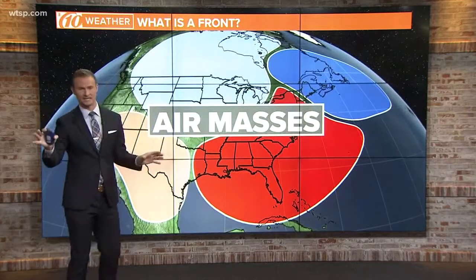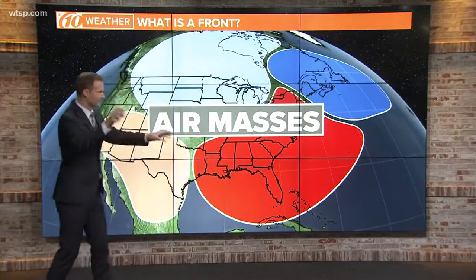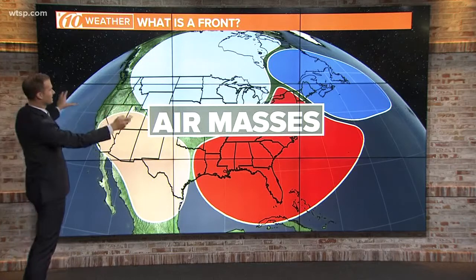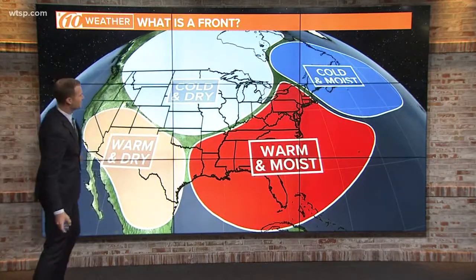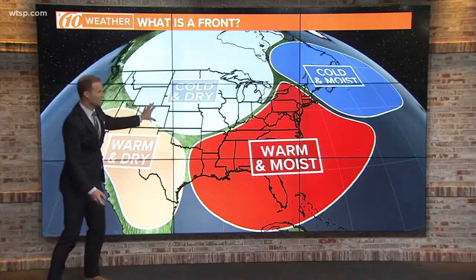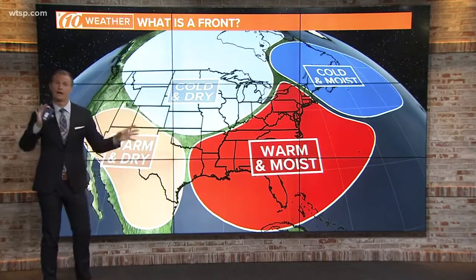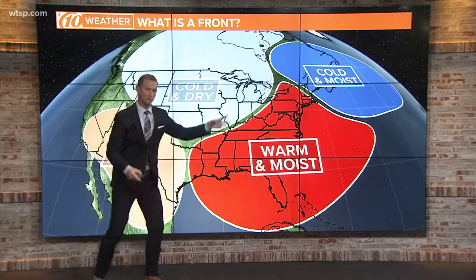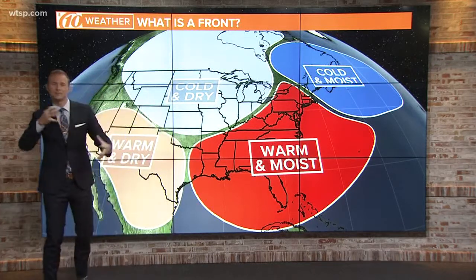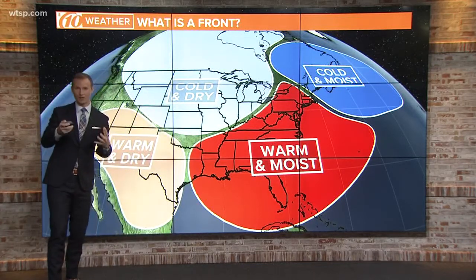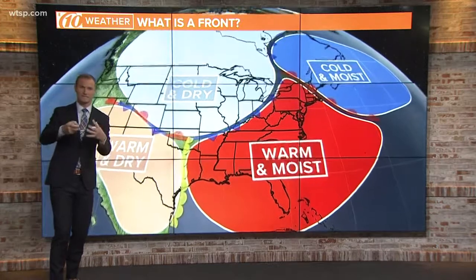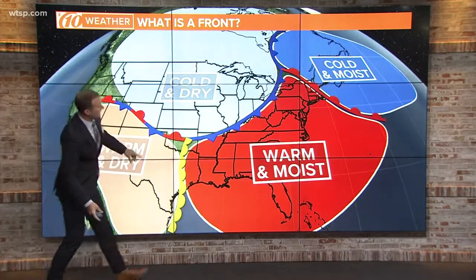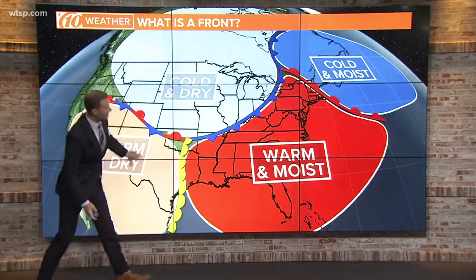It all starts with air masses. Think back to grade school — air masses floating around the earth at all times. You've got cold and dry air masses; they all have different properties. You have warm and moist air masses, cold and moist. So all these different properties make up different air masses, and all of these air masses are separated by these fronts.